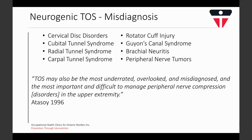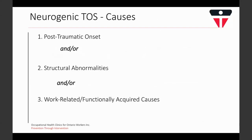There are three main causes of neurogenic TOS: the onset of symptoms following an acute traumatic event, post-traumatic symptoms due to structural abnormalities which could be congenital or slight variations in anatomy, and work-related or functional causes. These are not mutually exclusive and can contribute together. For example, those with congenital or structural abnormalities often don't know they're present unless some inciting event such as an acute accident or chronic stress causes them to become symptomatic.